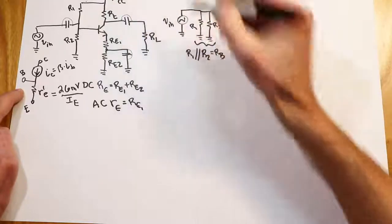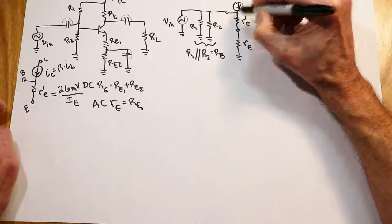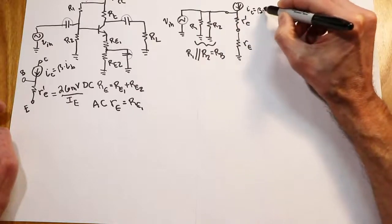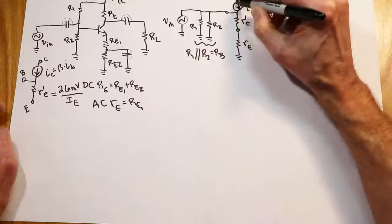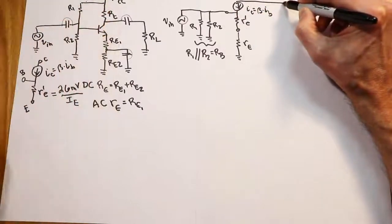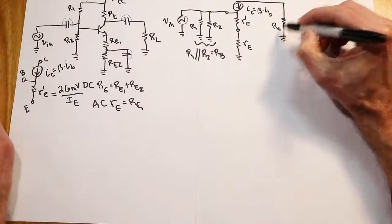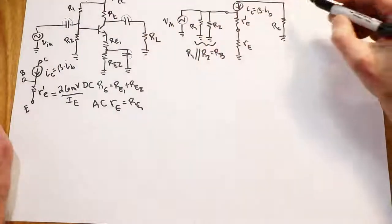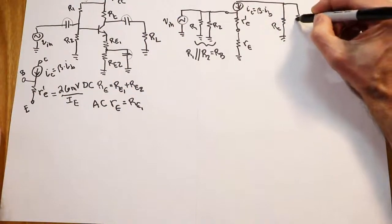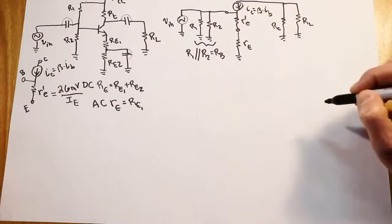Coming off the collector, we have our current source — that is beta times IB. Then we see RC, the biasing resistor, going again to AC ground from the power supply. And finally the output cap is shorted, and we have our load resistance RL.